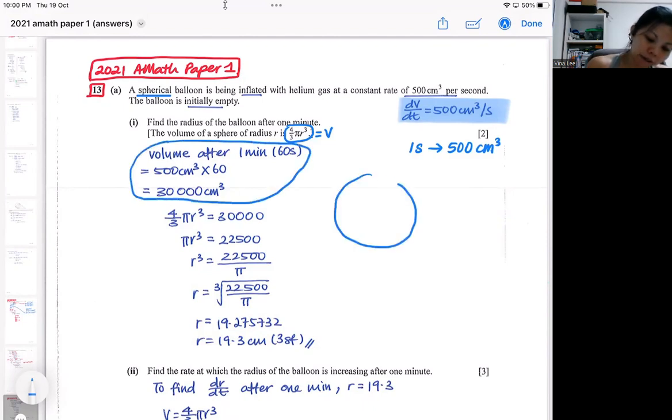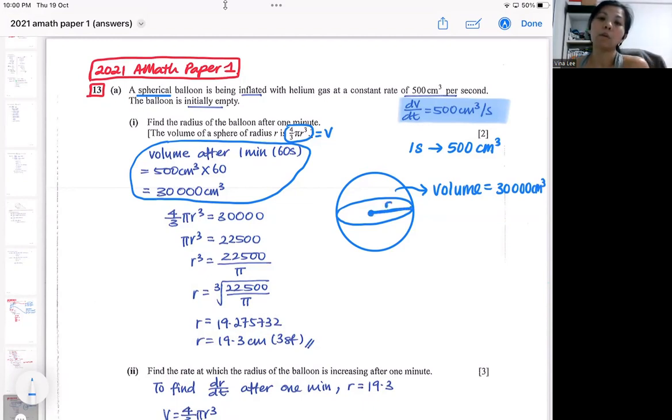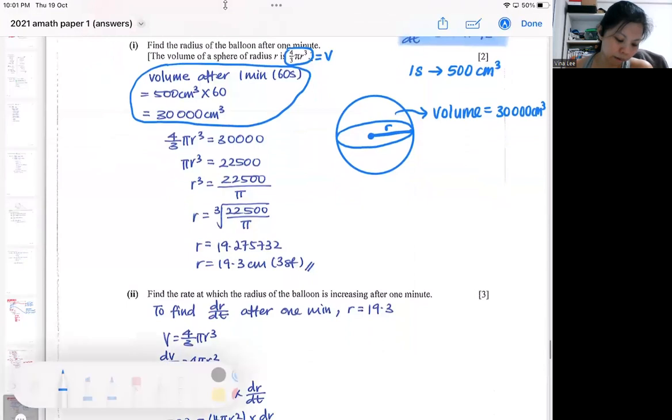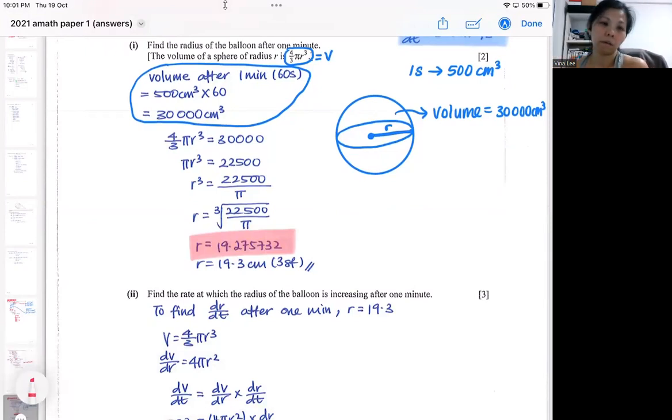So after one minute, my spherical balloon will be filled with this amount of gas. The volume after one minute will be 30,000. I'm asked to find the radius, which is just setting the volume formula to find the radius. So I execute 4/3 π r³ equals 30,000 and I solve for r. While you solve for r, it's a chain of decimal, so you will give your answer as 19.3 as a 3 significant figure answer.